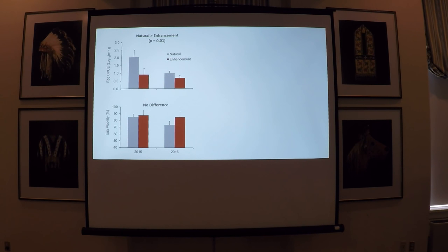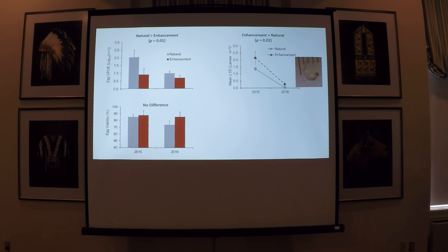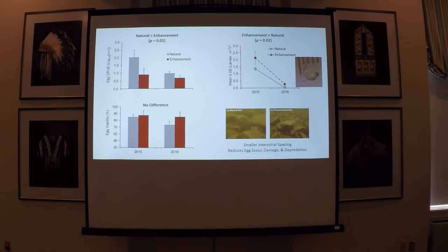Even though there were more eggs being spawned at the natural site, we saw the opposite effect when we looked at larval out-migration. We found significantly more larval walleye — higher densities — out-migrating from the enhancement site than the natural site, even though fewer eggs were spawned there. This increased egg-to-larval survival at the enhancement site appears almost completely attributable to the substrate installed there. The enhancement site had substrate that was coarser and significantly different from that at the natural site, and we speculate this provided smaller interstitial spacing that allowed eggs to settle and protected them from potential scour, damage, and direct and indirect rates of depredation.